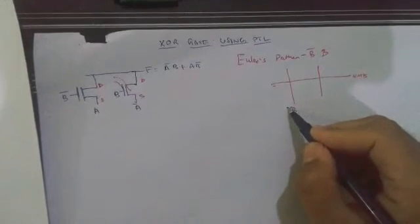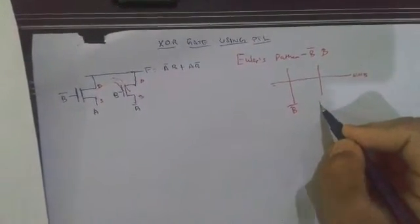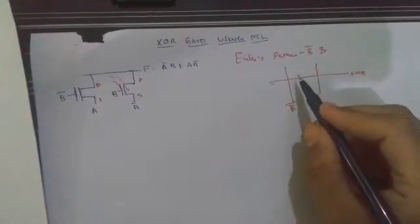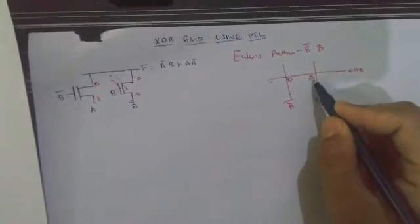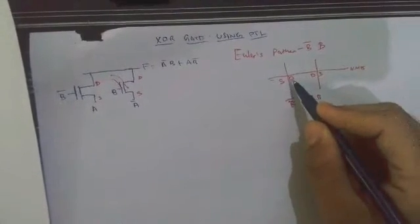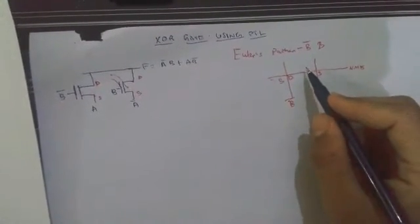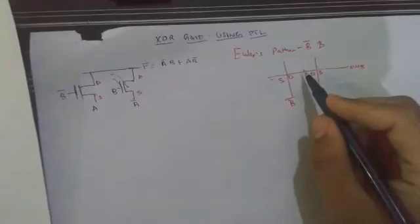This transistor corresponds to B bar and this transistor corresponds to B. Now the drain region is this one and this one. The source region is this one. We can see both drain regions are connected and they are joined to the output of the schematic.